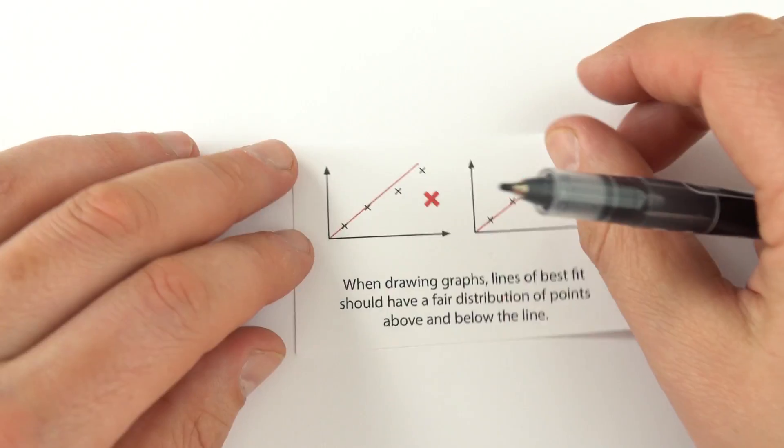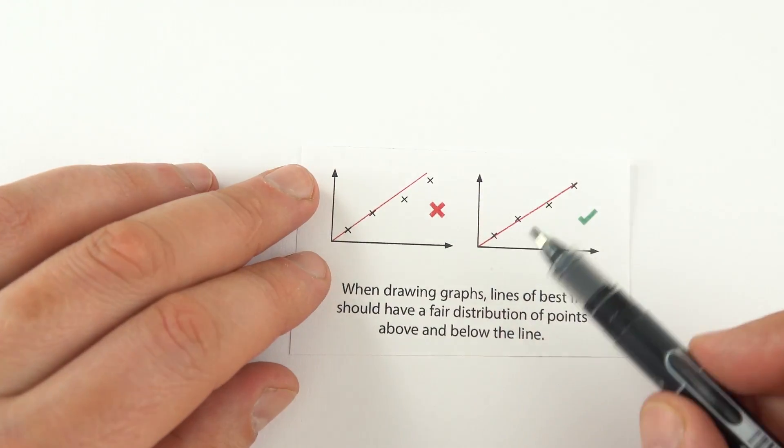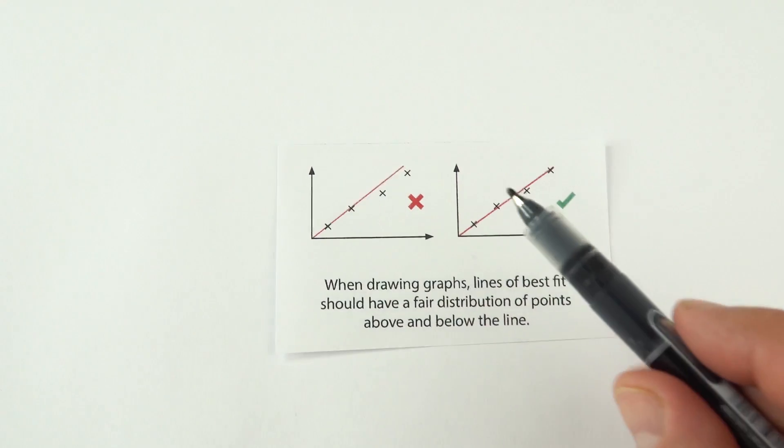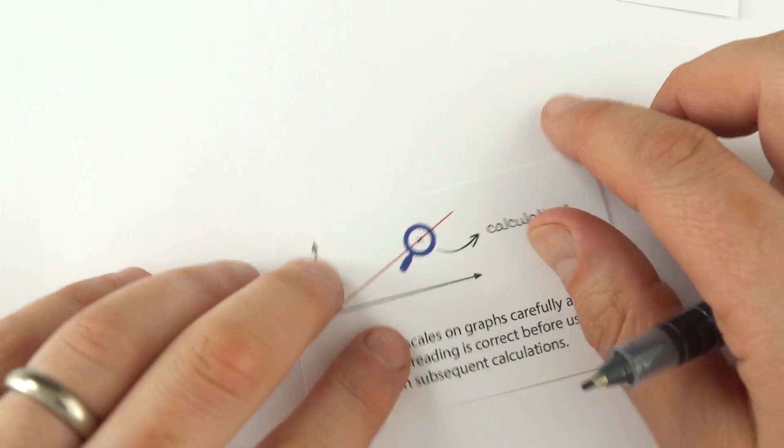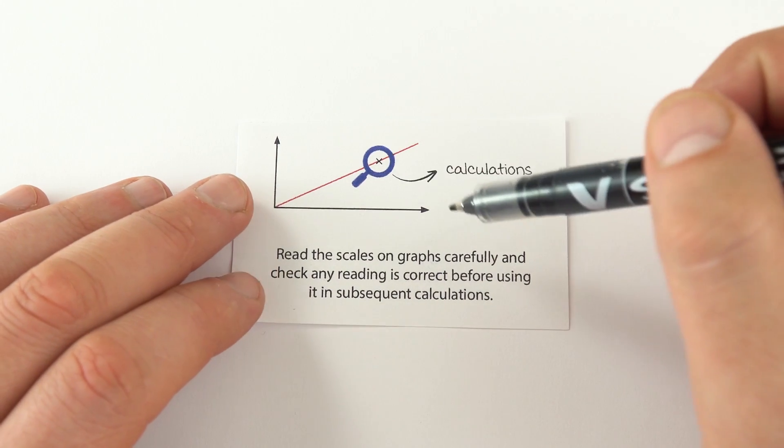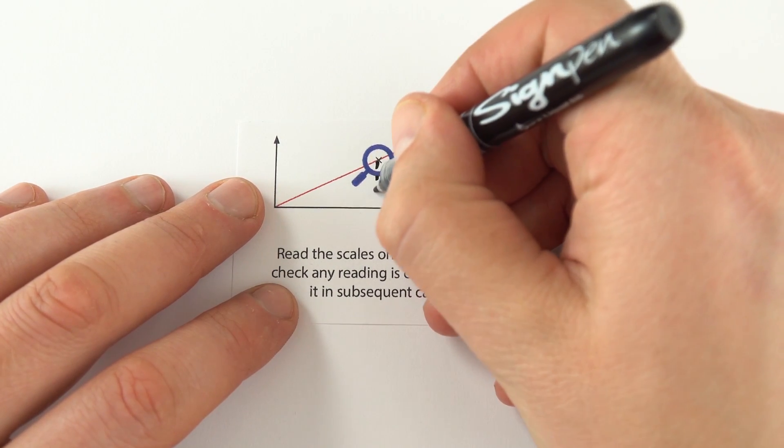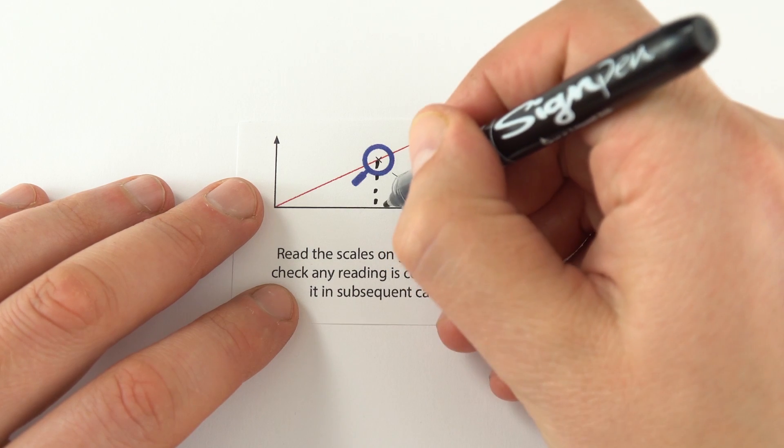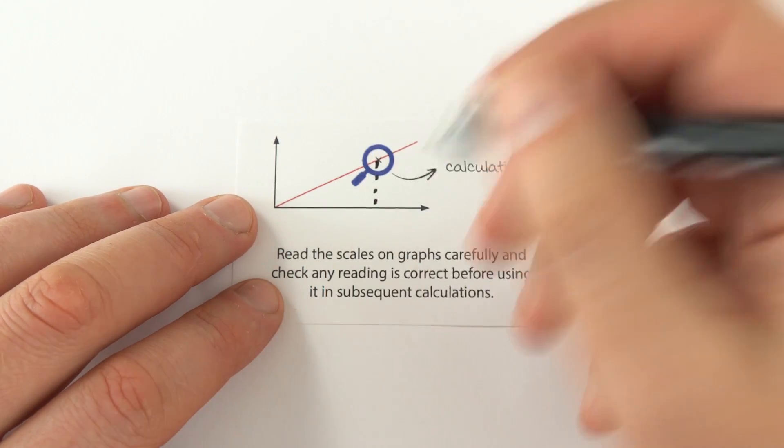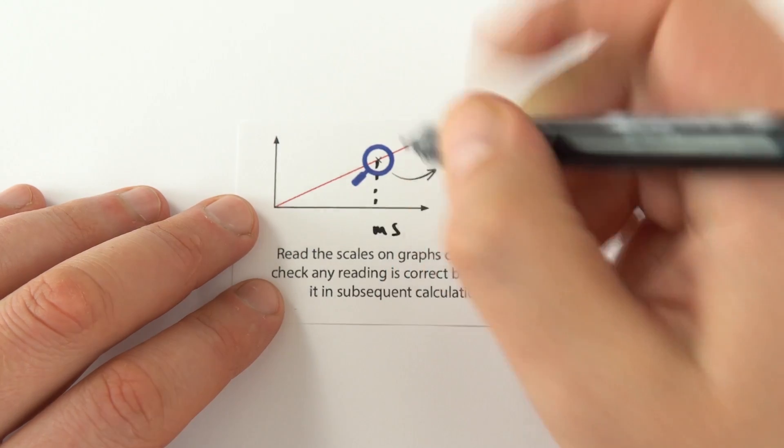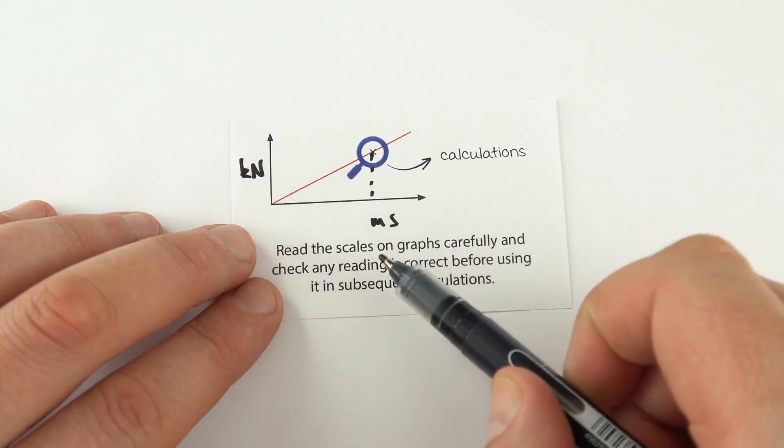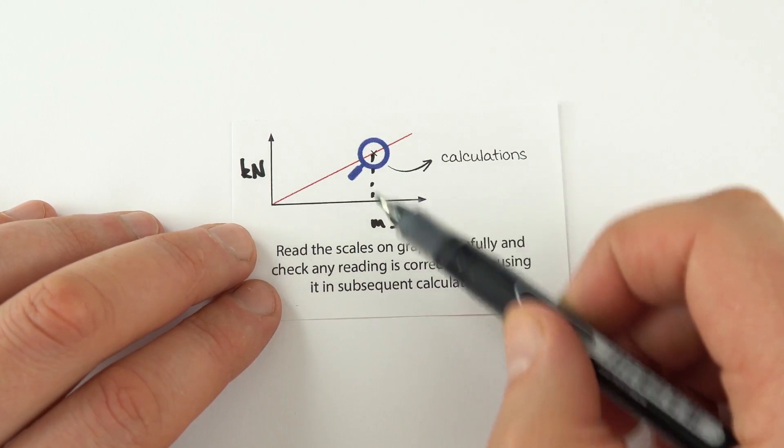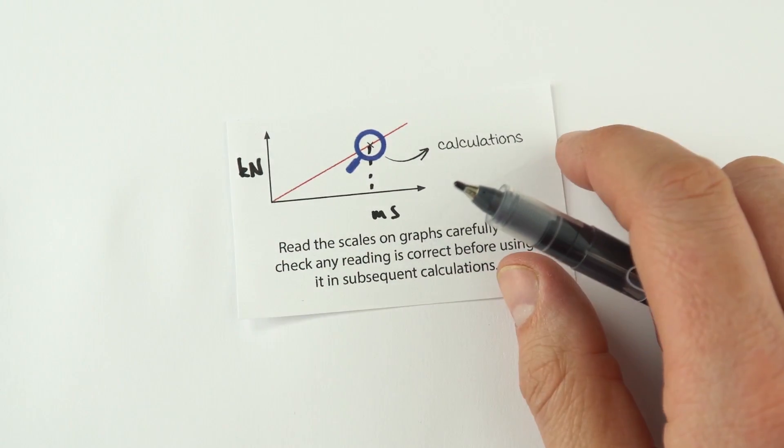This has happened so many times where I've seen people who just read the wrong thing off. Make sure that whatever you're reading off, you take a bit of time just checking it's the right thing and checking if there's any units. It might be, for example, a time measured in milliseconds or a force in kilonewtons. Sometimes you've got a prefix on the axes. Make sure you take them into account when you're reading data off the line to maybe put into another calculation.